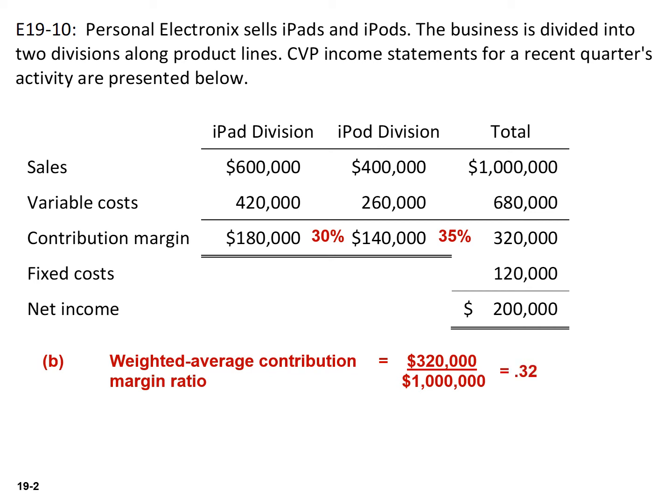The alternative is to use the sales mix for each division and multiply that by each division's contribution margin. If you take the iPad's 60% sales mix and multiply that by the contribution margin of 30%, and add the iPod's sales mix of 40% multiplied by 35% contribution margin, you'll get a weighted average contribution margin ratio of 32%.